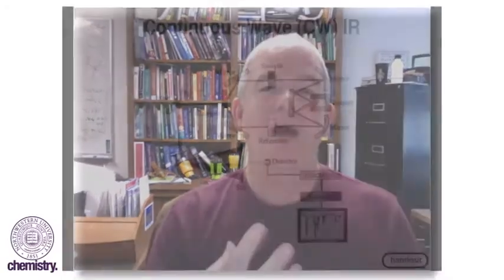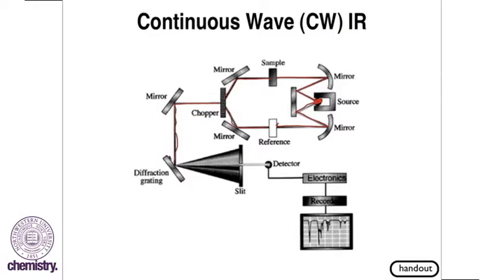All of that information goes to a detector, is amplified, printed out on a piece of chart paper, and that's how you collect IR spectra on a CW-IR.